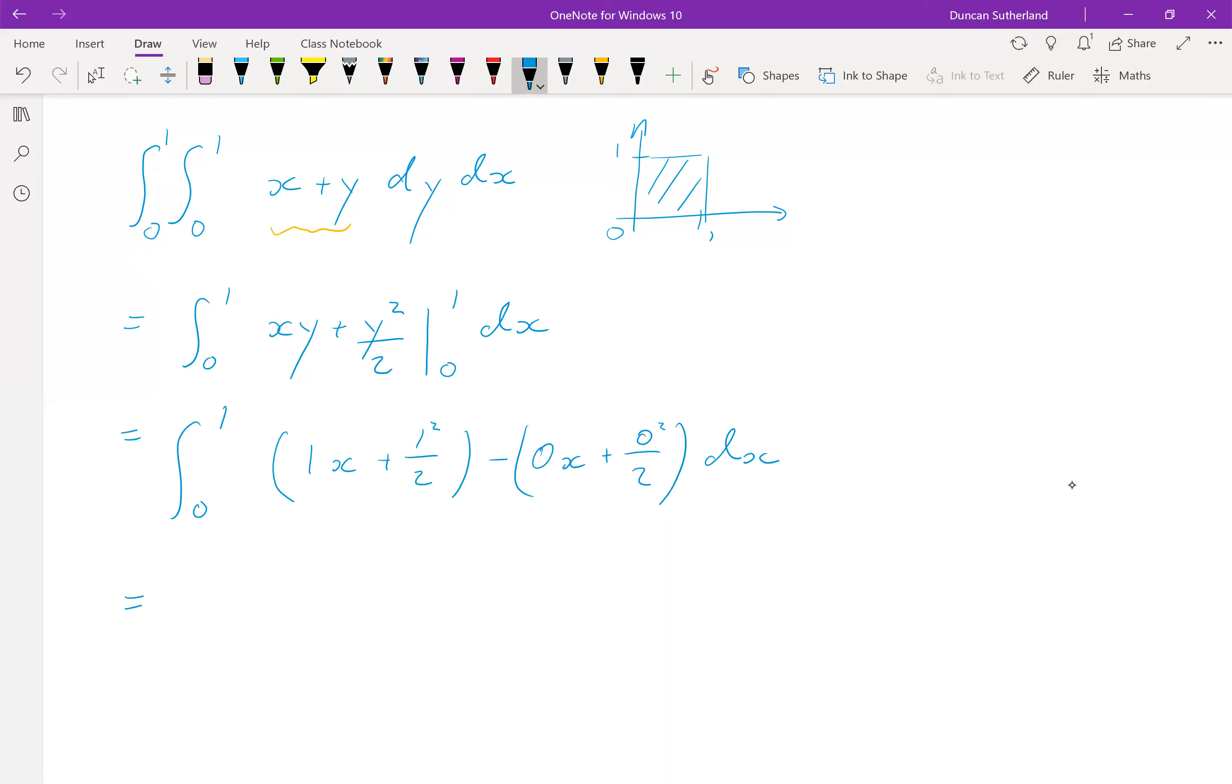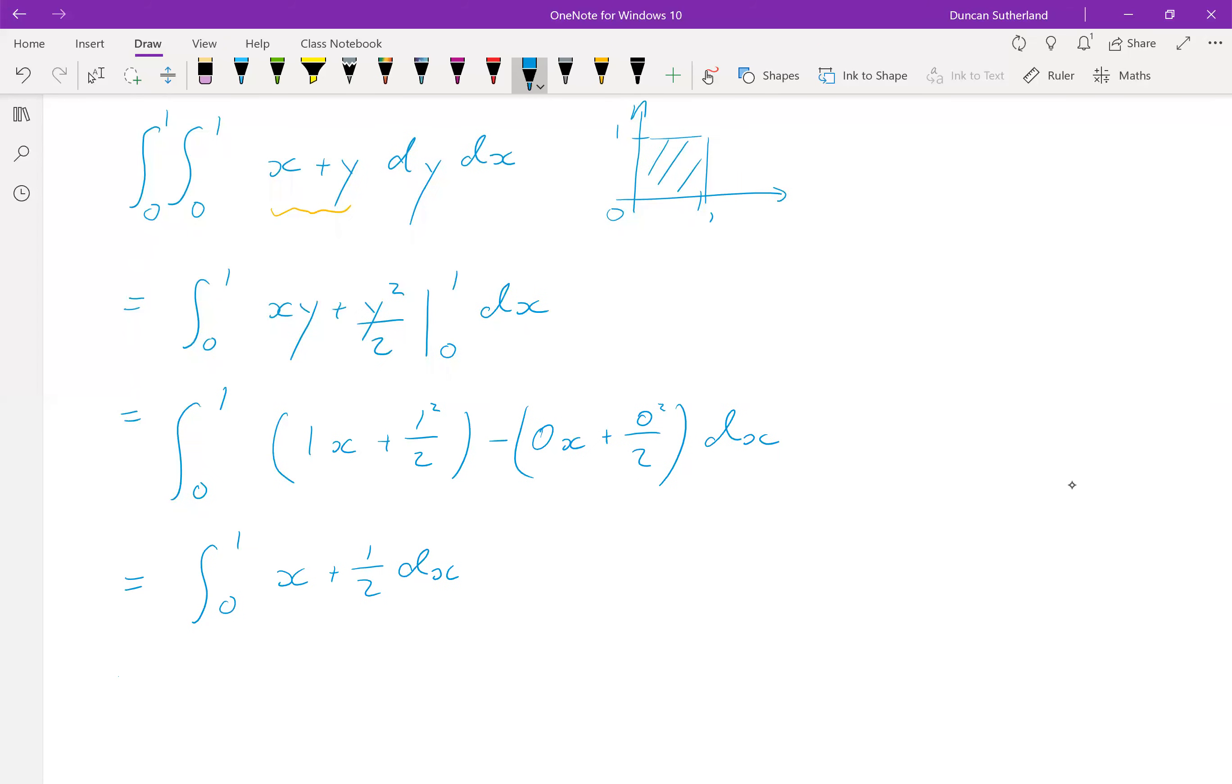So what we end up with is the integral from 0 to 1 of x plus 1 half dx, which is equal to x squared over 2 plus 1 half x between 0 and 1. The bottom limit is obviously 0 again. However, the top limit yields a value of 1 because we get a half plus a half and that's equal to 1.